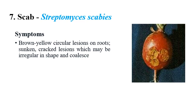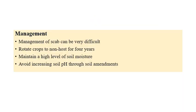Scab is the last disease and it is a bacterial disease caused by Streptomyces scabies. Initially small spots appear; the spots coalesce and look like bigger spots. Cracked lesions and a rough, corky surface can be clearly seen. When you touch the tuber, a corky and sunken surface can be felt. For management: crop rotation is one practice; avoid increasing soil pH; and application of soil organic amendments is also recommended.